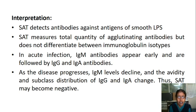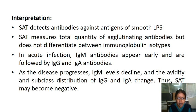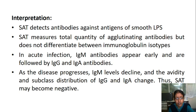The SAT measures total agglutinating antibodies but does not differentiate between immunoglobulin isotypes. In acute infection, IgM antibodies appear early, followed by IgG and IgA. As disease progresses, IgM levels decline and IgA levels increase, so the SAT may become negative in chronic infection. The SAT also has false-negative and false-positive reactions.